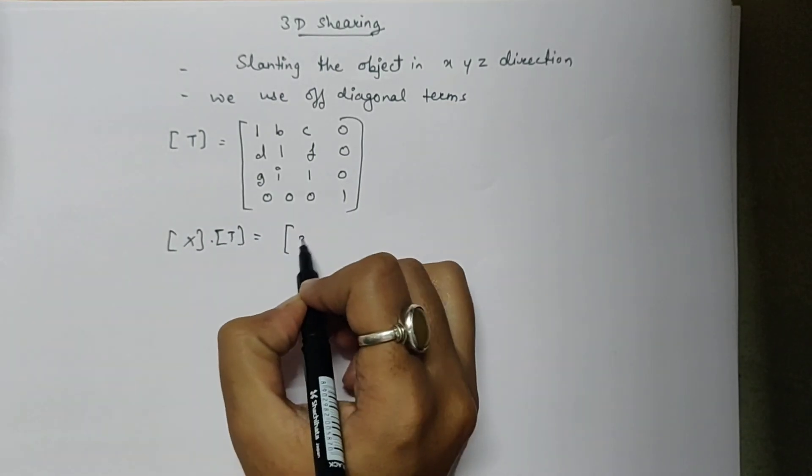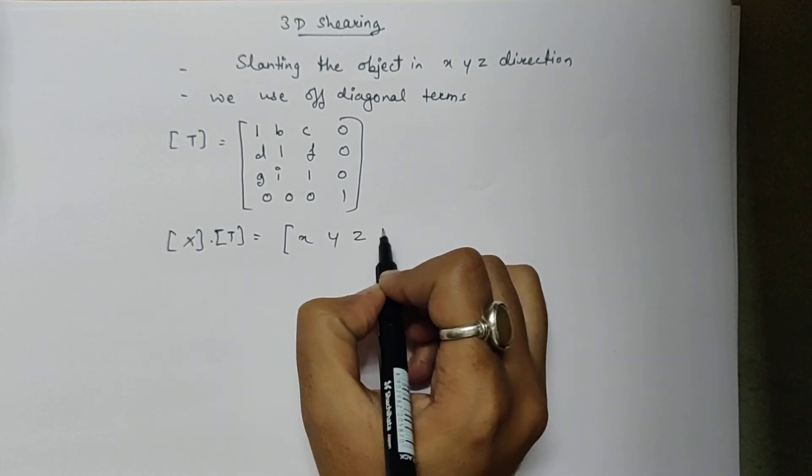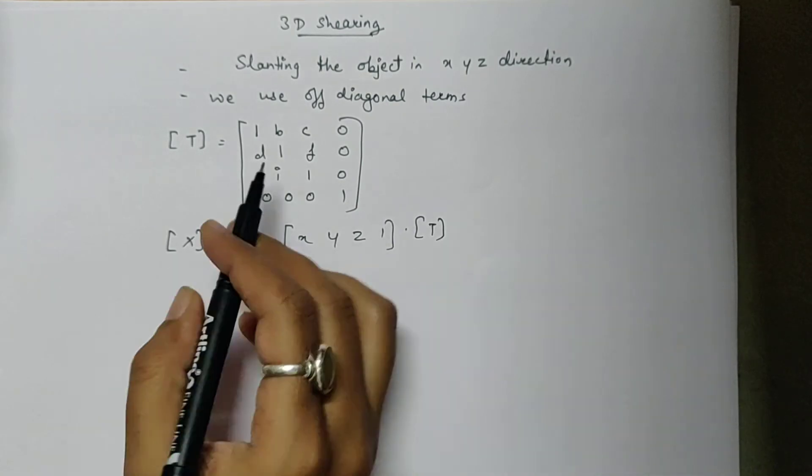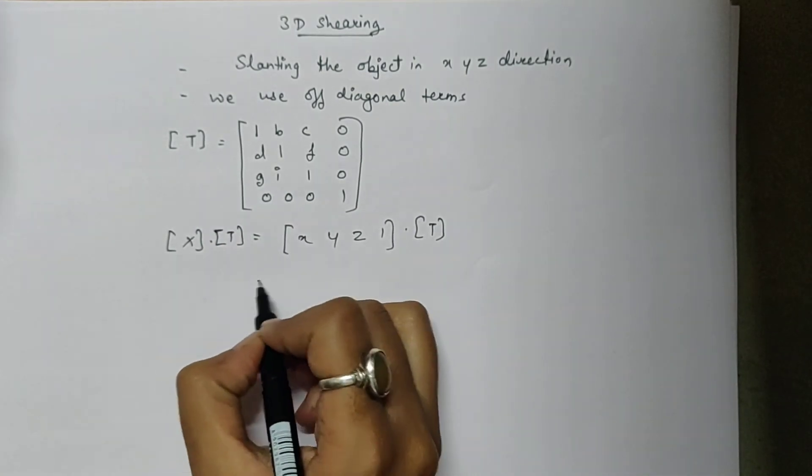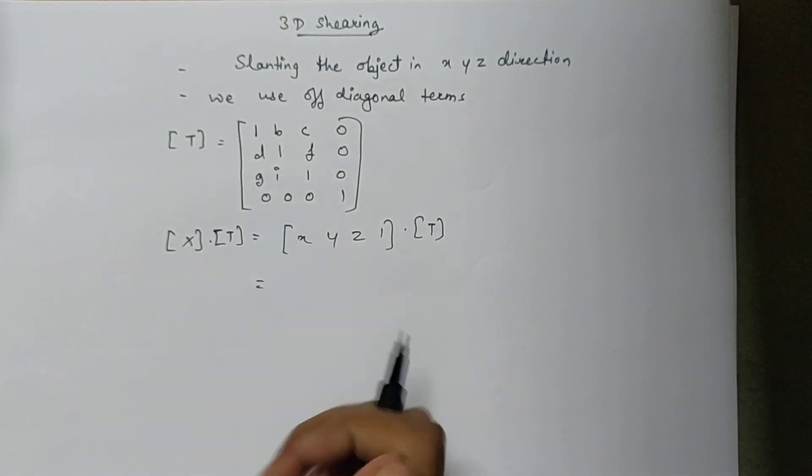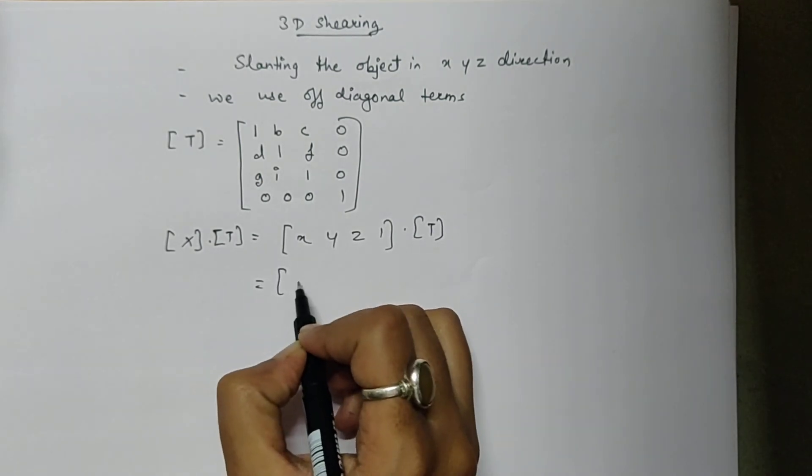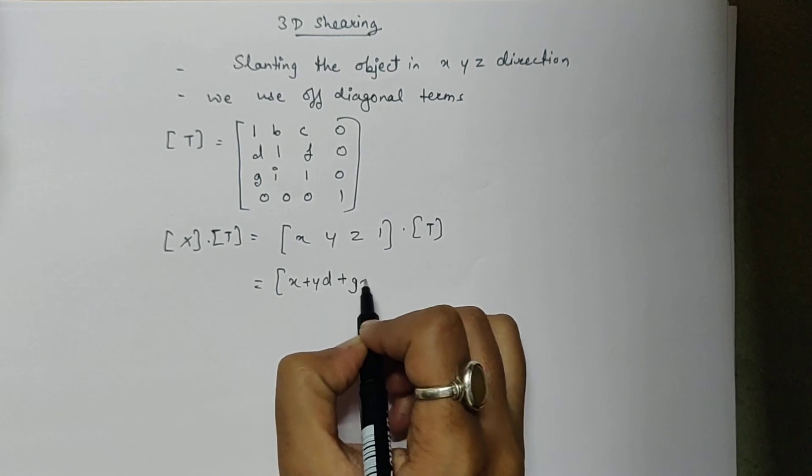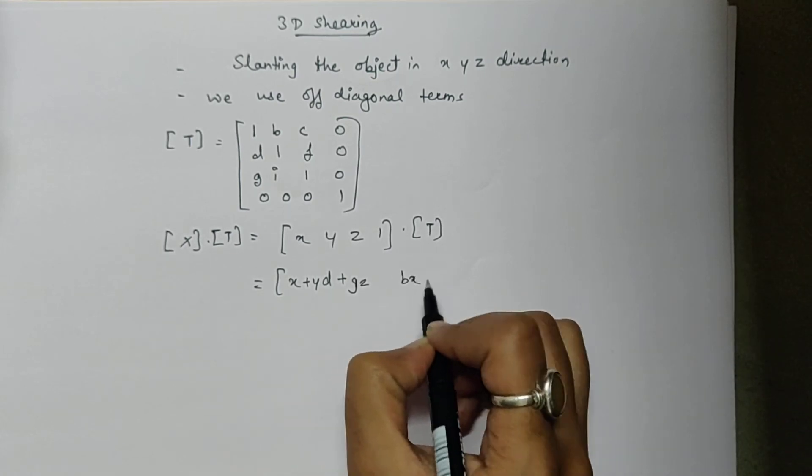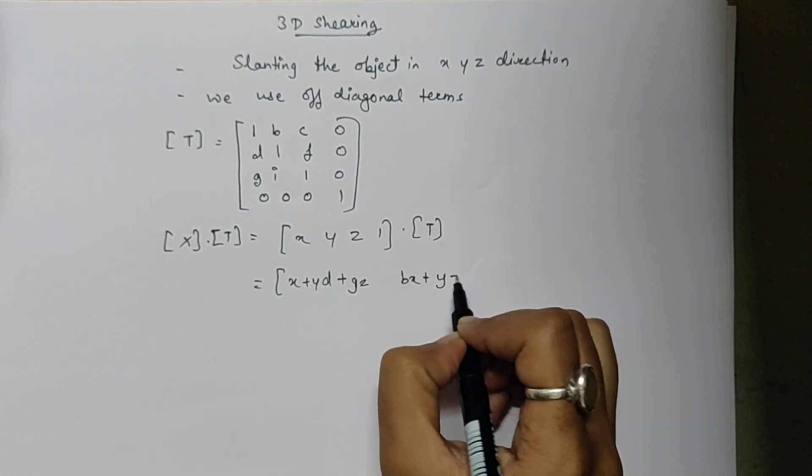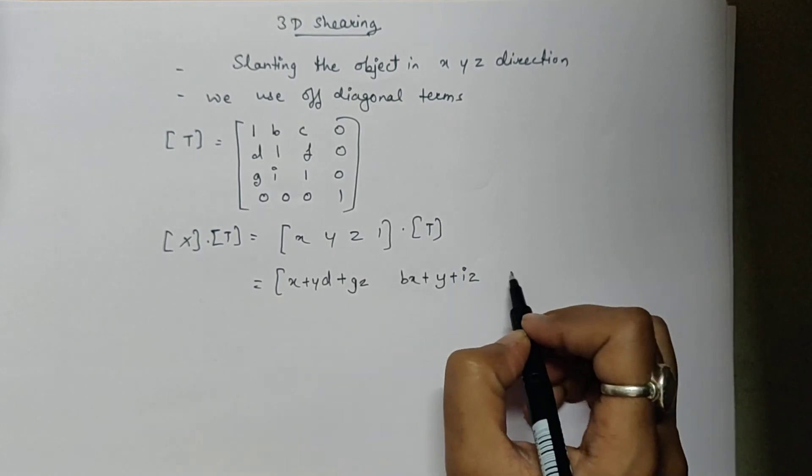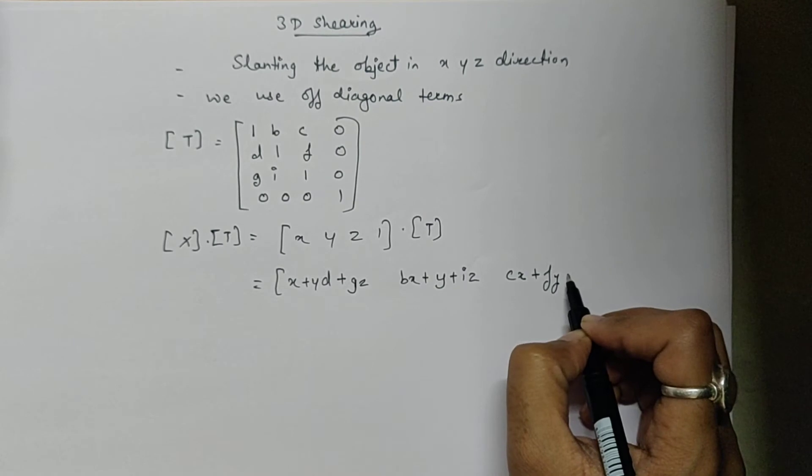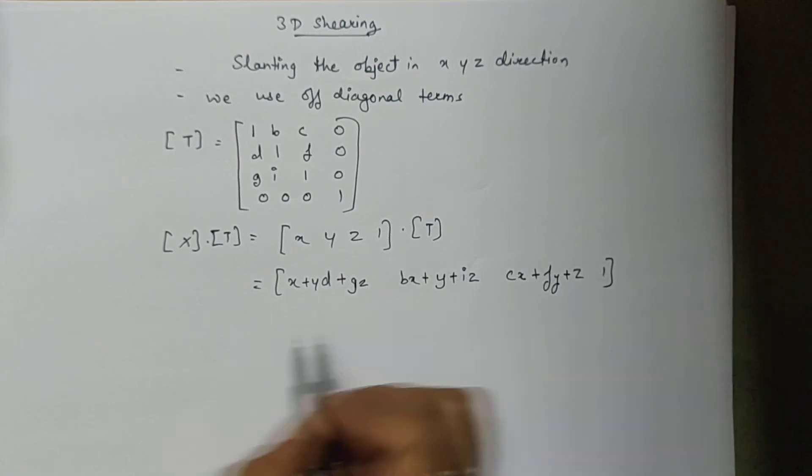We have the original points as x, y, z, and 1, and we have matrix T. When we multiply X with T, we get: x + yd + gz, bx + y + iz, cx + fy + z, and 1. This is X times T for shearing.